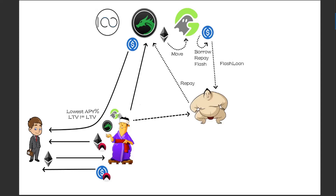What makes Fuji DAO good is it will continue to monitor these positions. When the best protocol changes — in this case maybe to Geist — it will tell the rebalancer to rebalance the position. The rebalancer will take a flash loan, repay the debt, move the collateral over to the new protocol, then borrow out USDC to repay the flash loan. This flash loan doesn't have to come from the same protocol; it could come from Iron Bank or anywhere else in DeFi. So now your debt is on Geist and your APY may be lower.